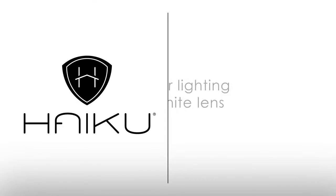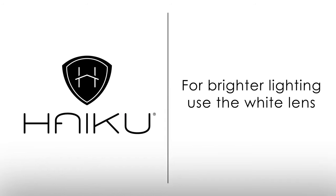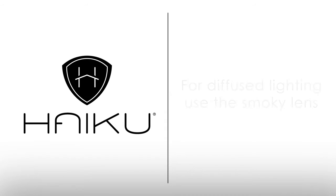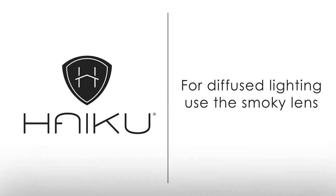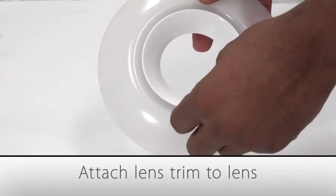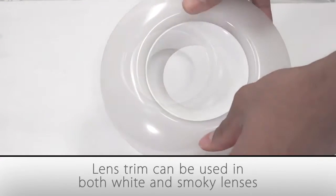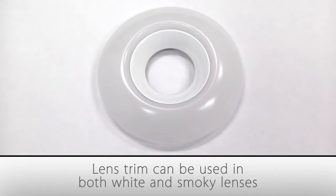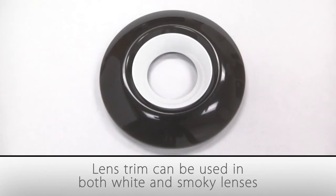You are now ready to choose a lens to install. For brighter lighting, install the white lens. For more diffused lighting, install the smoky lens. Once you've selected a lens, attach the lens trim by pressing it gently into place. The lens trim can be used with both the white and smoky lenses.